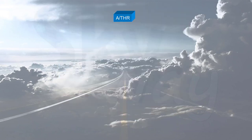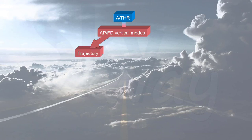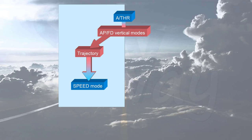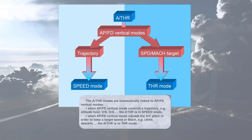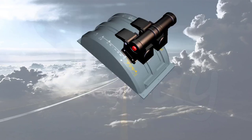The auto thrust modes are automatically linked to autopilot flight director vertical modes. When the autopilot flight director vertical mode controls a trajectory, e.g. altitude hold, vertical speed, or glide slope, the auto thrust is in speed mode. When the autopilot flight director vertical mode adjusts the aircraft pitch in order to keep a target speed or Mach, e.g. climb or descent, the auto thrust is in thrust mode.